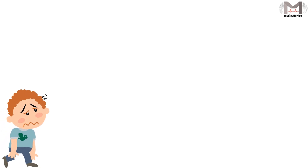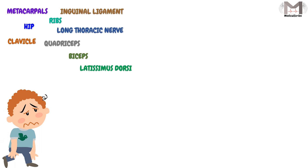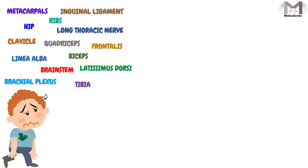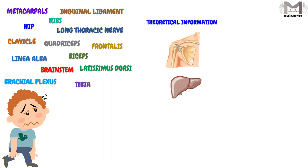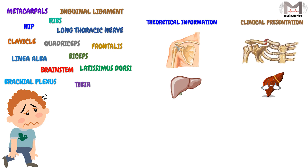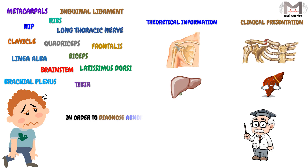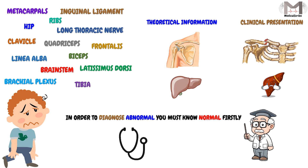The problem most students face is the difficulty in understanding anatomy, and I partially agree with them — because we have to understand and memorize a lot of new words, relationships, and many details, and sometimes we don't know the benefit. But in fact, when we correlate this theoretical information with the clinical presentations we will deal with later, we will understand the importance of anatomy. As our professor said: in order to diagnose the abnormal, you must first know the normal — the normal structures and functions of the human body — so you can diagnose and treat abnormalities correctly.